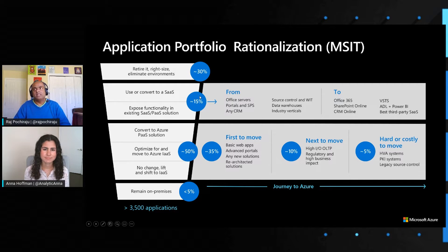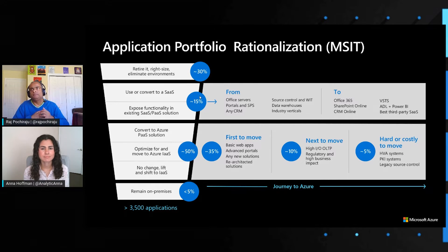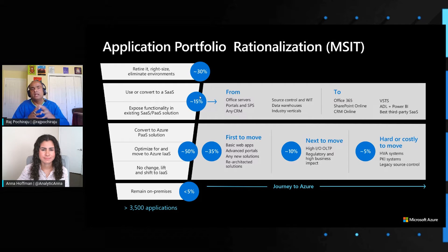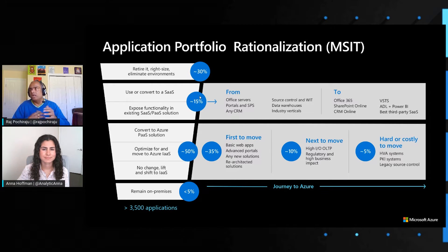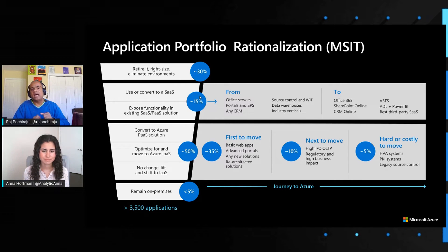Then there's about 15% of applications — for example, internal-use apps like email services and CRM — where the team looked at whether they could use existing off-the-shelf solutions. That's where they started leveraging software as a service. For example, Dynamics CRM was used for customer management applications, and email services were migrated to Office 365. Segregating all workloads into these buckets really helped them plan migrations well.